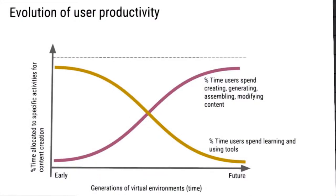That's another graph, and you might see that the trend lines look very similar — maybe there is a relationship between those two slides. If you look at the evolution of user productivity in any application, and you have to spend a lot of time learning an application before you can actually use it, I wouldn't count that as a productivity tool. The amount of time left to produce anything becomes so small that learning becomes a bottleneck. Over time, you want to increase the percentage of time users spend creating, generating, assembling, and modifying things, and decrease the time spent having to learn and use tools.